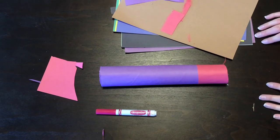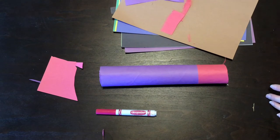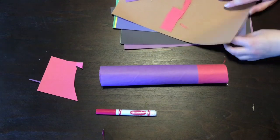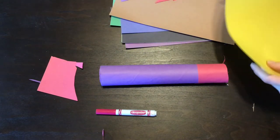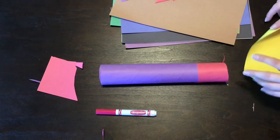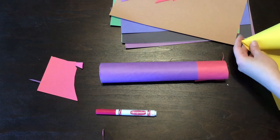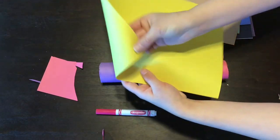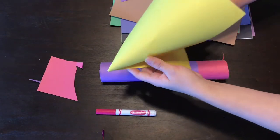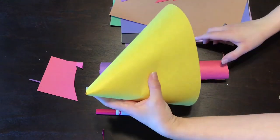Now, this doesn't really look like a rocket ship, does it? You know what I need? I need the top of my rocket ship. Let's see. How about some yellow? What I need to do is make the top of my rocket ship, the little triangle part. So I'm gonna grab my paper and I'm gonna roll it. Roll it. There we go. That's what I'm looking for.